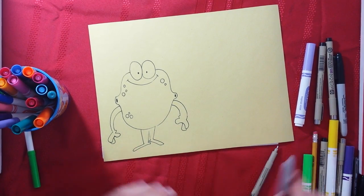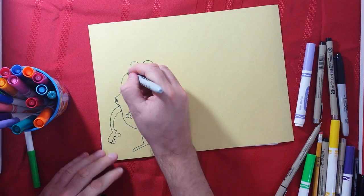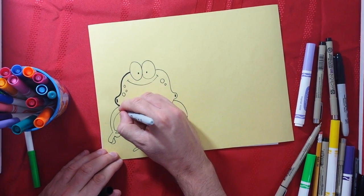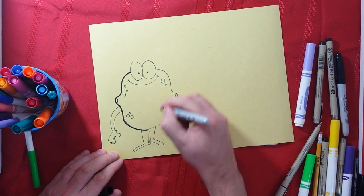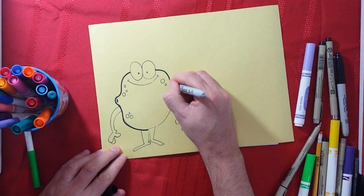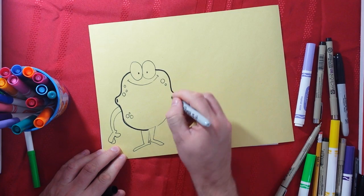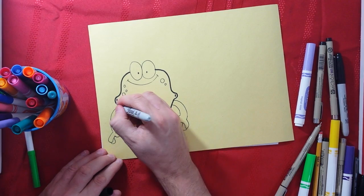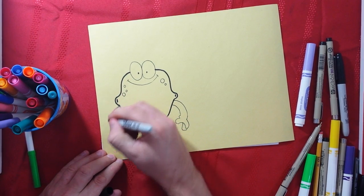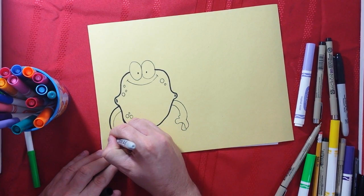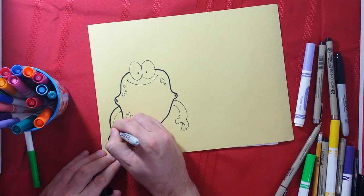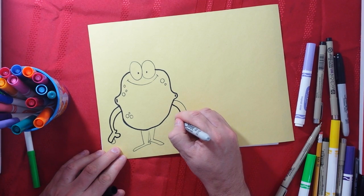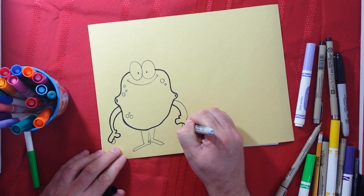Alright, so we've got our little lemon guy here. We're going to darken around his body. So the first letter of yellow is Y. Second letter, anybody know? Is E.